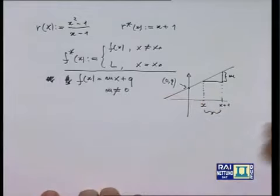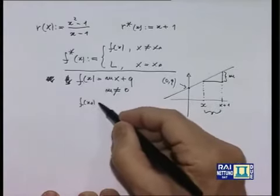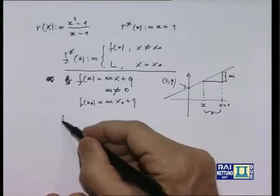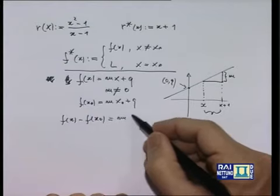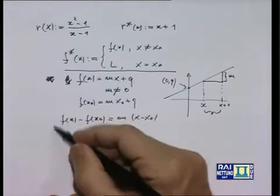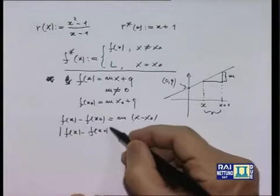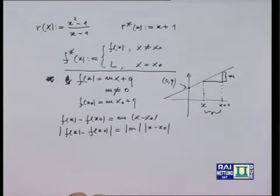Occupiamoci del caso m diverso da 0. Preso un punto x₀ ad arbitrio, devo valutare la differenza f(x) - f(x₀). Vediamo: f(x) = mx+q, f(x₀) = mx₀+q; facendo la differenza membro a membro, q e q si semplificano, e ottengo f(x) - f(x₀) = m(x - x₀). Prendendo i valori assoluti: |f(x) - f(x₀)| = |m| · |x - x₀|, ricordando che il valore assoluto di un prodotto è uguale al prodotto dei valori assoluti.